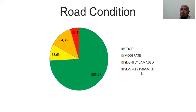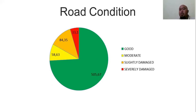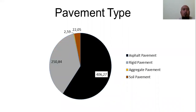There is a diagram showing road condition with four characteristics: good, moderate, slightly damaged, and severely damaged. The circle diagram shows the proportion of road length by condition category. There is also a diagram showing the proportion of road length by pavement type: asphalt, rigid, aggregate, and soil.